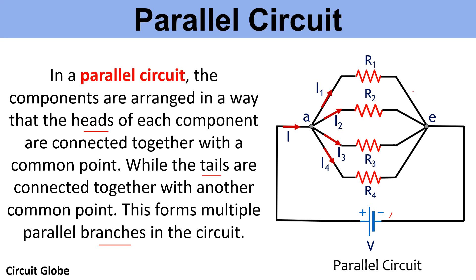In this figure it is clearly shown that the heads of R1, R2, R3, and R4 are all connected to a common point A, and similarly the tails of R1, R2, R3, and R4 are connected to a common point E. Due to the presence of parallel branches, current in the circuit individually flows through each branch.